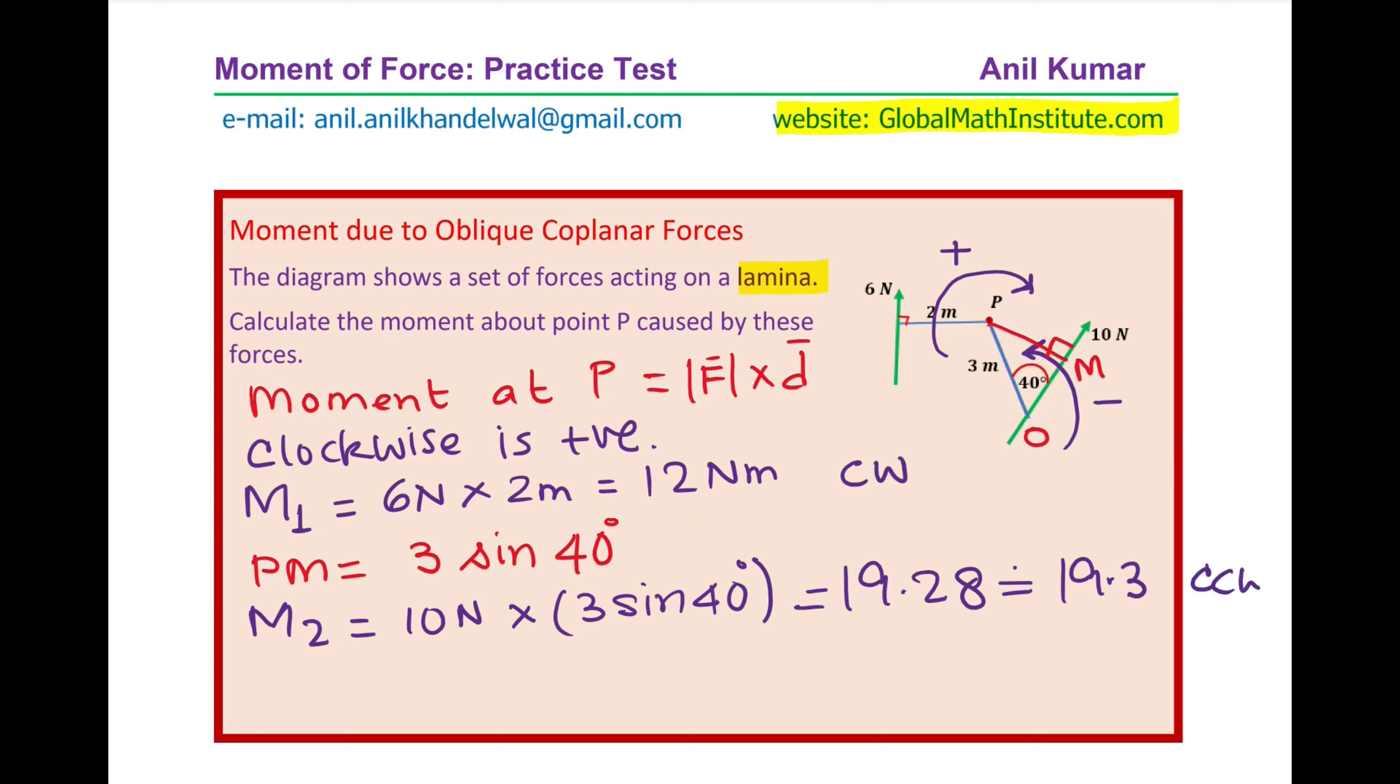Now, we see that the first moment was clockwise and this one is counterclockwise. If I consider clockwise as positive, then counterclockwise will be negative. Therefore, we can write the net moment as the sum of these two, which will be 12 Newton meter minus 19.3 Newton meter and that is equal to minus 7.3 Newton meter. So negative basically indicates that the moment is counterclockwise or anti-clockwise. So we can say that the answer is 7.3 Newton meter counterclockwise.